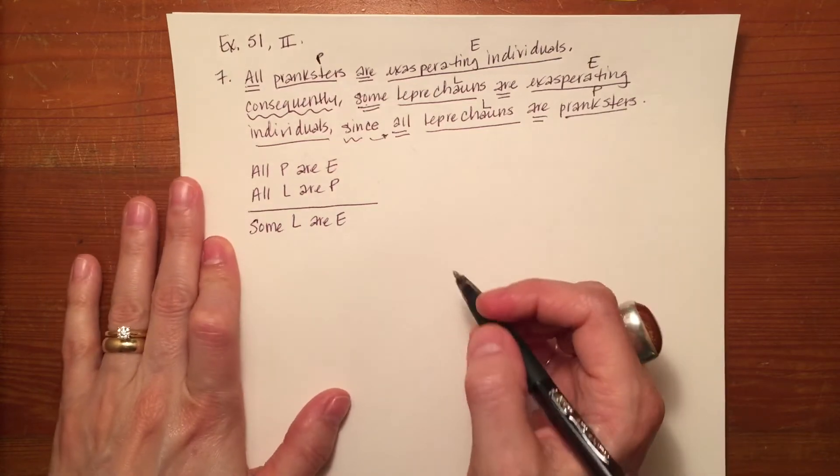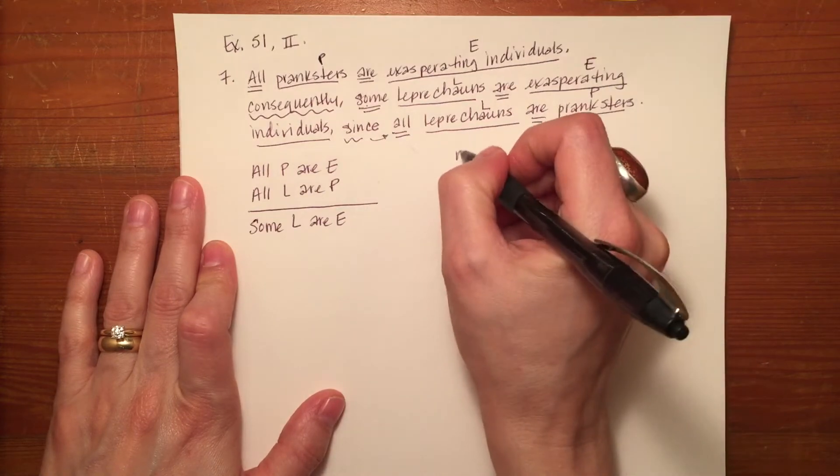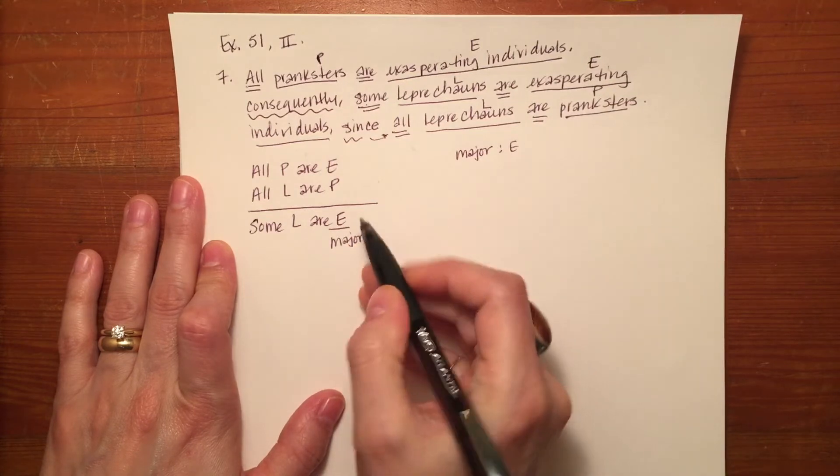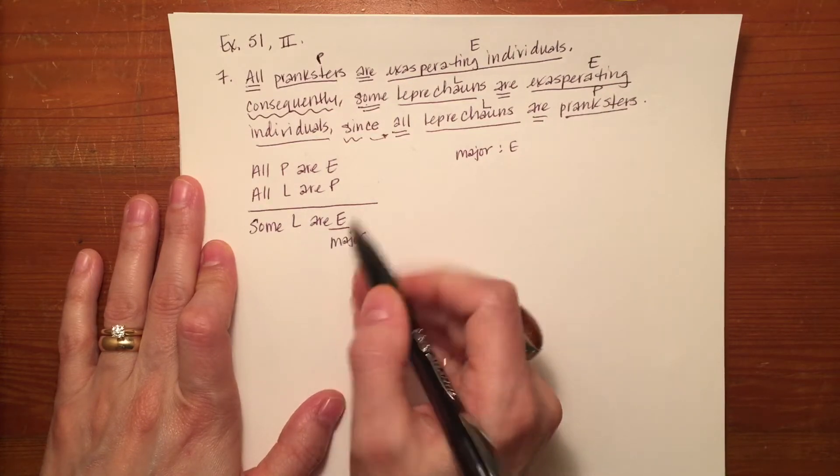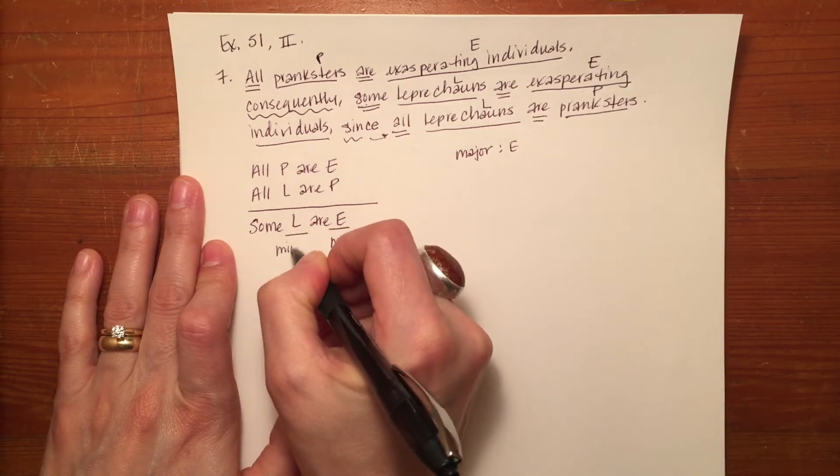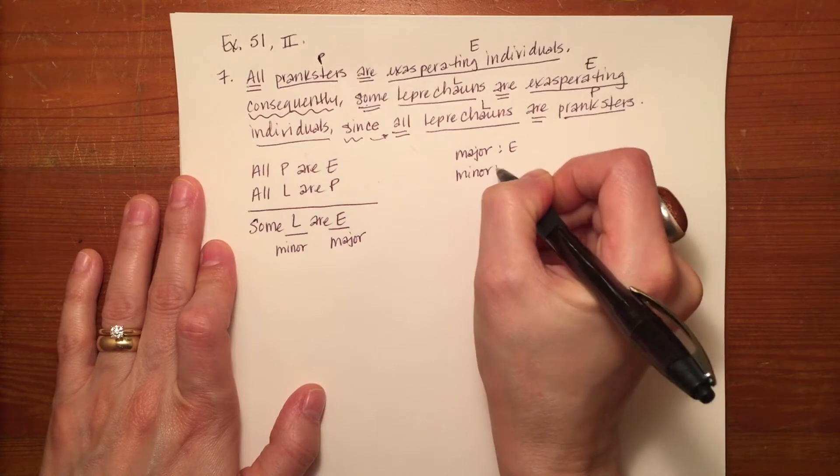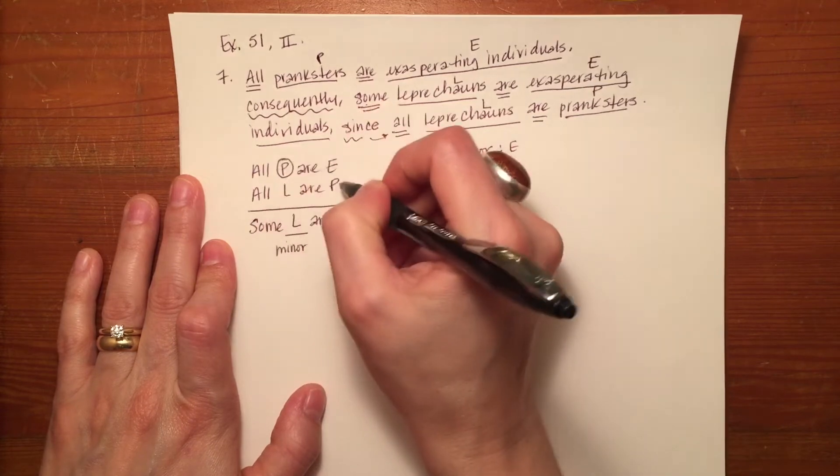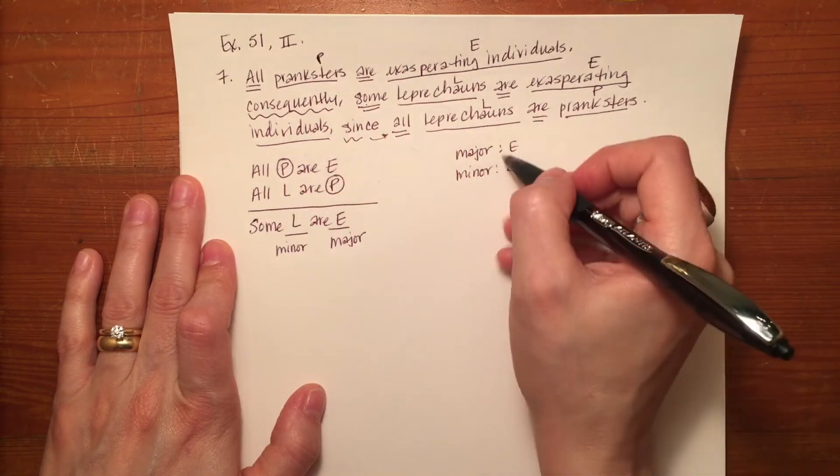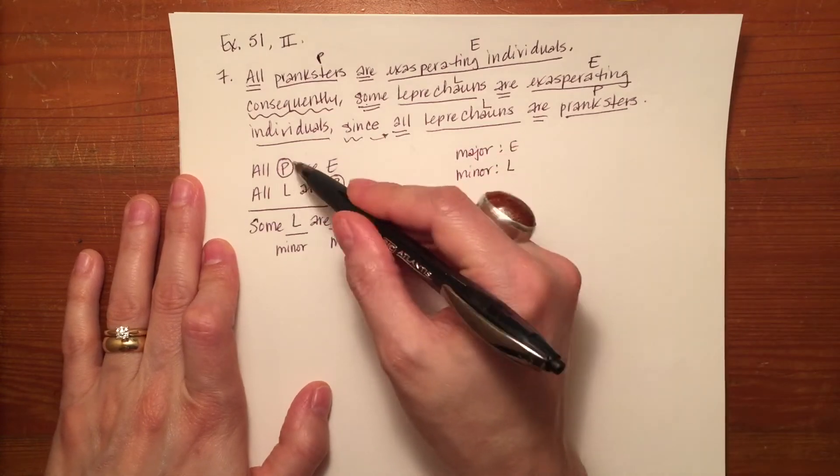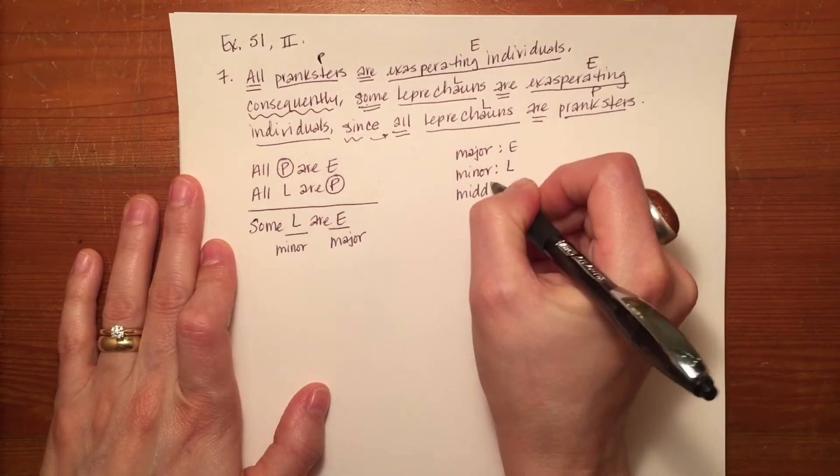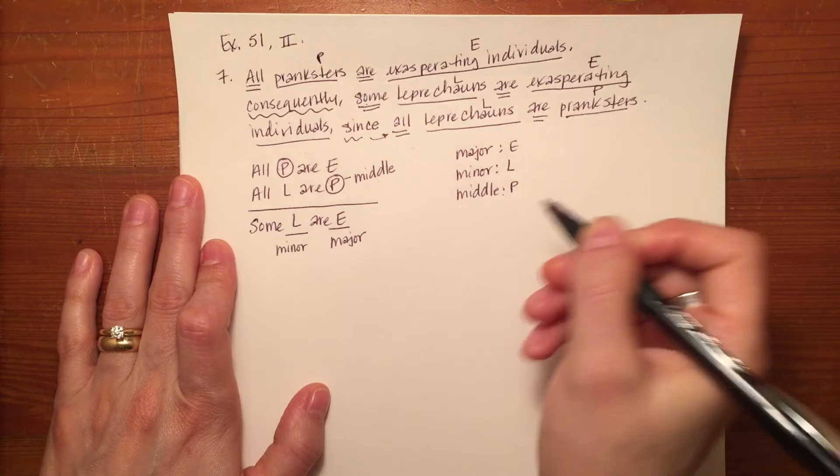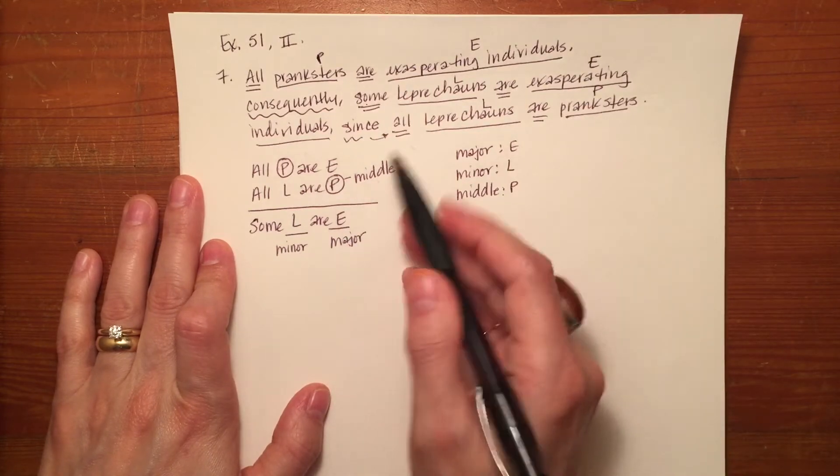Now I'm going to do what I did before. I'm going to identify the major term, which is E. It's again the major term because it is the predicate term of the conclusion. The L is the minor term because it is the subject term of the conclusion. And then P here and here just coincidentally, as in the previous example, the P is the middle term. I've clearly labeled my major, minor, and middle terms.